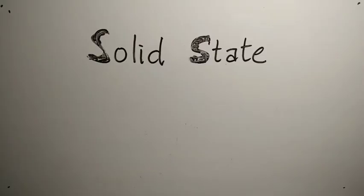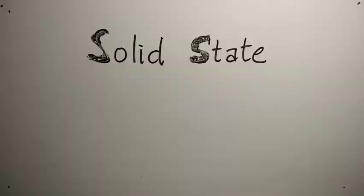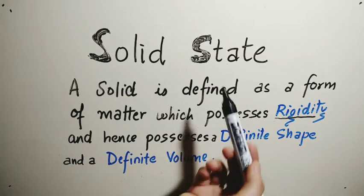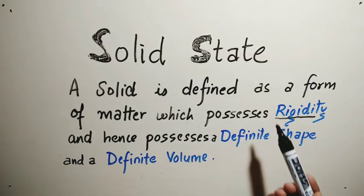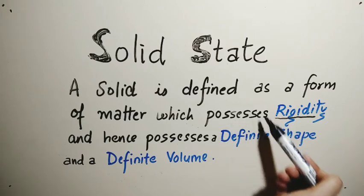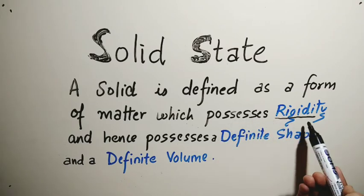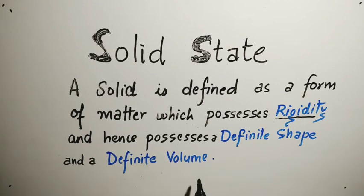Today we will discuss the introduction of the solid state, Chapter 1 of Class 12, Part 1. Solid is defined as a form of matter which possesses rigidity, and hence possesses a definite shape and a definite volume.